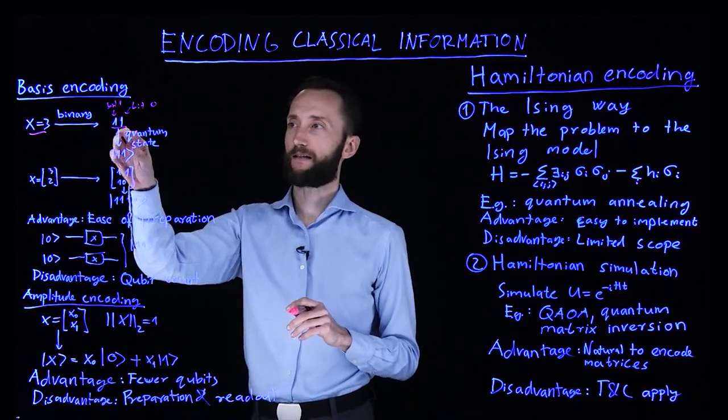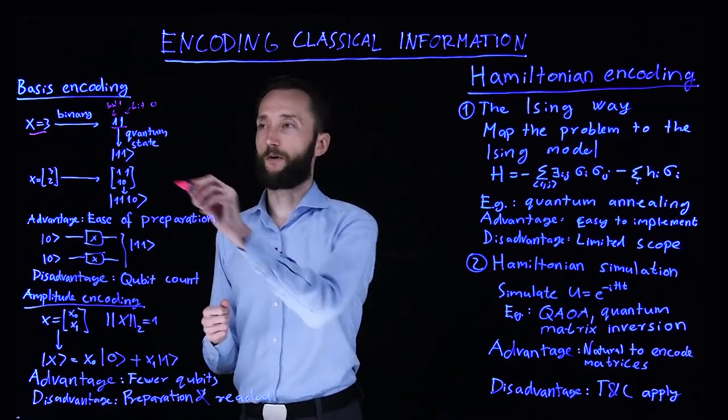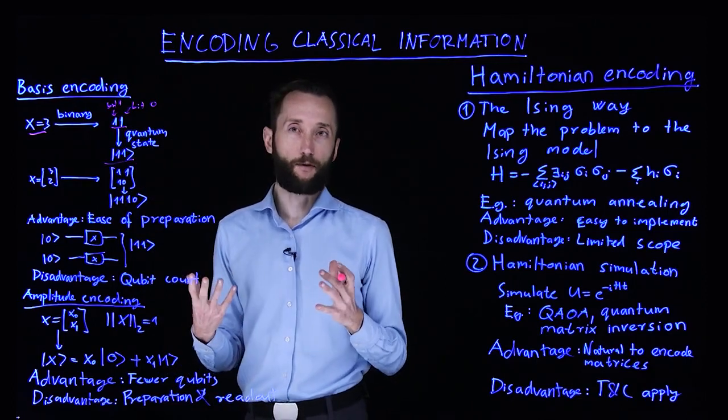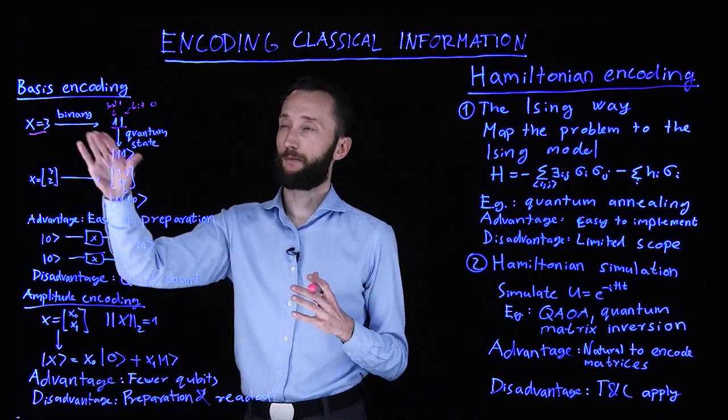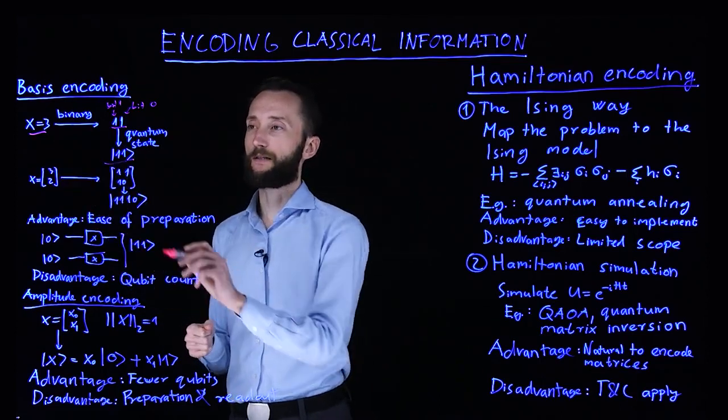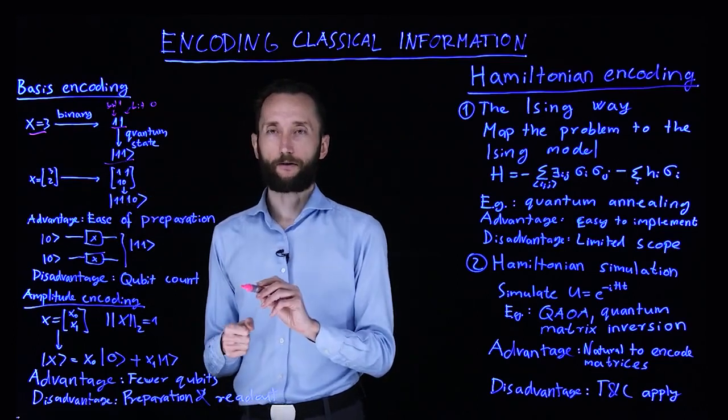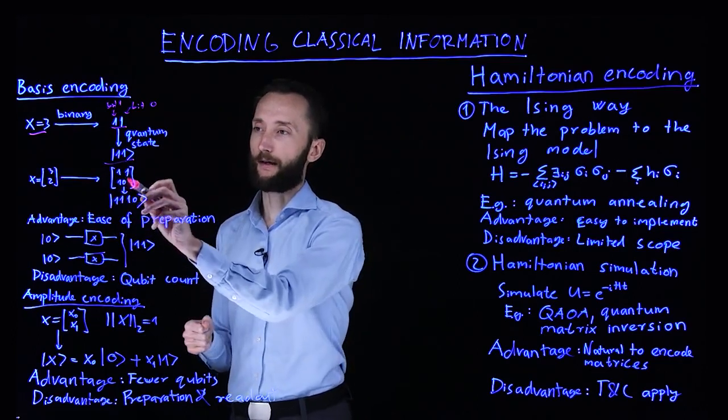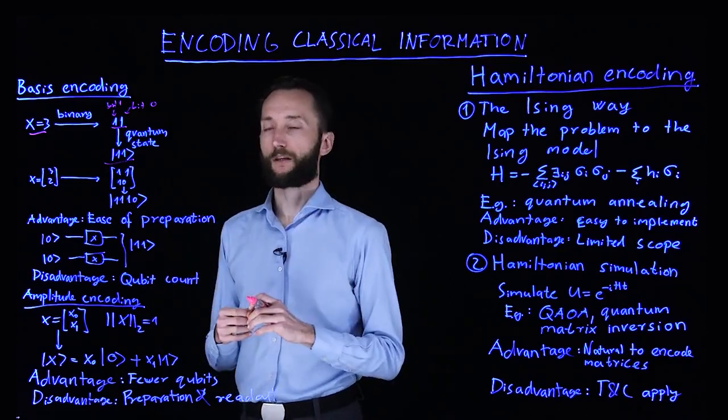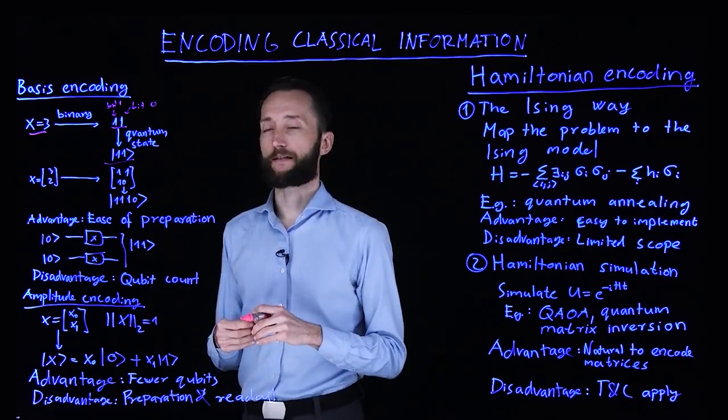And then you just take this and write it as a quantum state. You would use two qubits and flip both of them to 1, and it would describe the number 3. If you have a vector of these two elements, you can create a binary vector of that and then concatenate the two strings into a single four qubit state in this case.